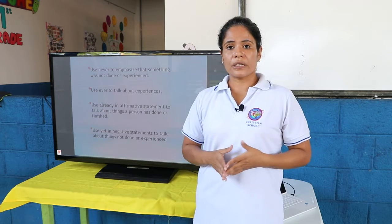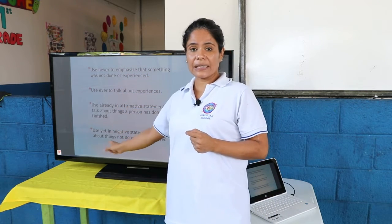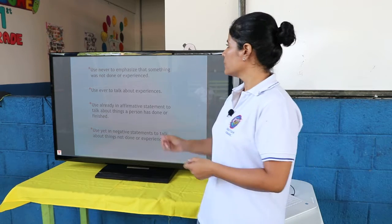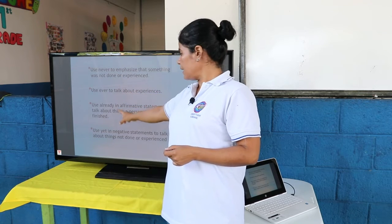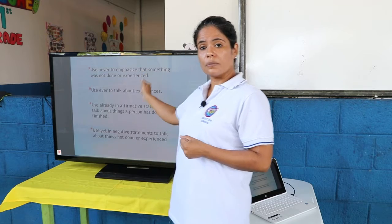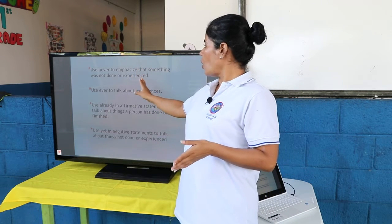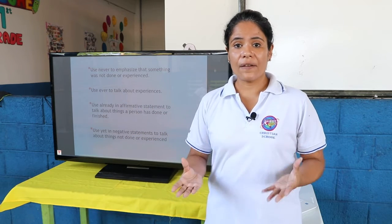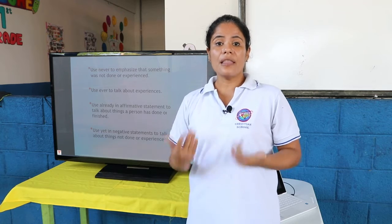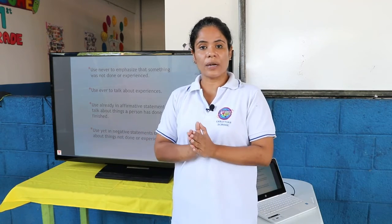For the use of the present perfect, we are going to have these words: never, ever, already, and yet. En el presente perfecto, nosotros tenemos cuatro palabras que vamos a utilizar en las oraciones: never, ever, already, and yet. Use never to emphasize that something was not done or experienced. Nosotros vamos a utilizar never para enfatizar que nunca hemos hecho algo o hemos vivido una experiencia — nunca he experimentado esto o nunca he hecho una experiencia.